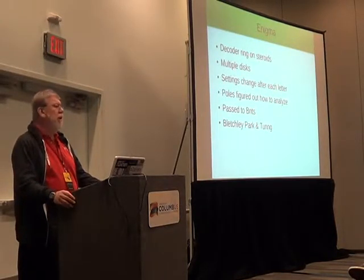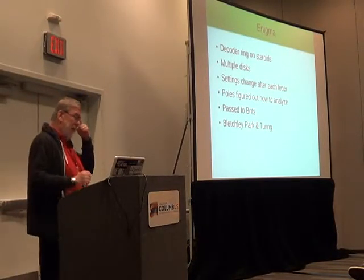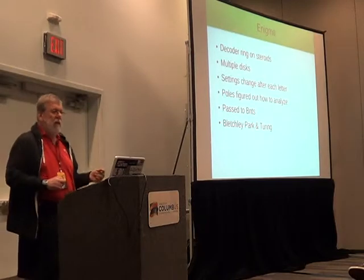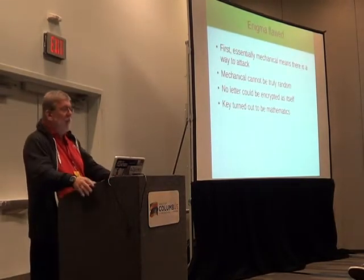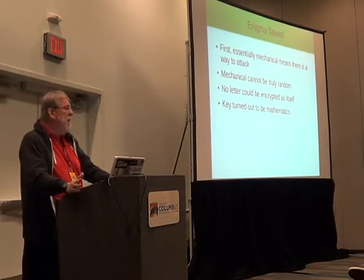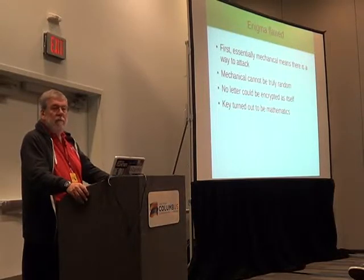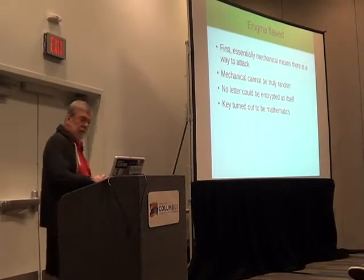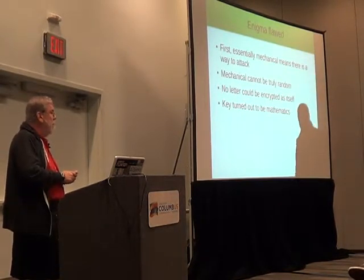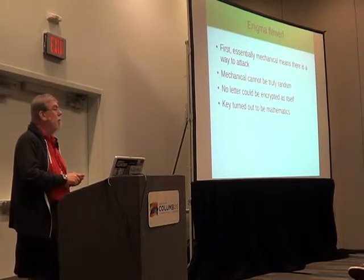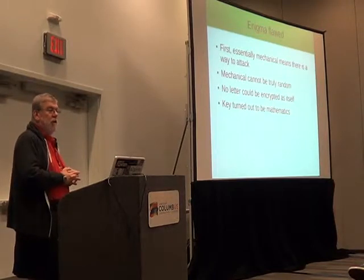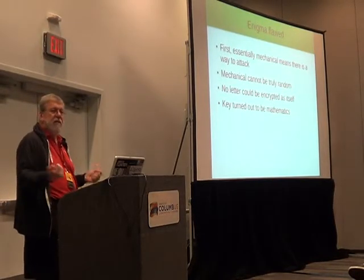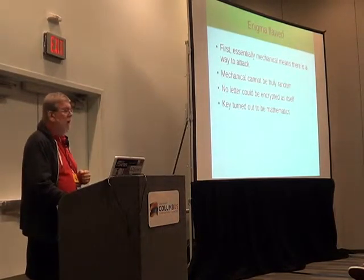What we're dealing with here is the whole question of randomness. Random is something that a lot of people don't entirely understand — it is really the key to all of this stuff. Enigma was flawed in a couple of ways. Generally speaking, if it's a mechanical way of changing one letter to another, it's not random enough. There is no way you can mechanically create randomness. One of the conditions with the Enigma machine was that no letter could be encrypted as itself. Anything that gets you away from 100% pure randomness is a thread that a good cryptographer can grab and do something with.